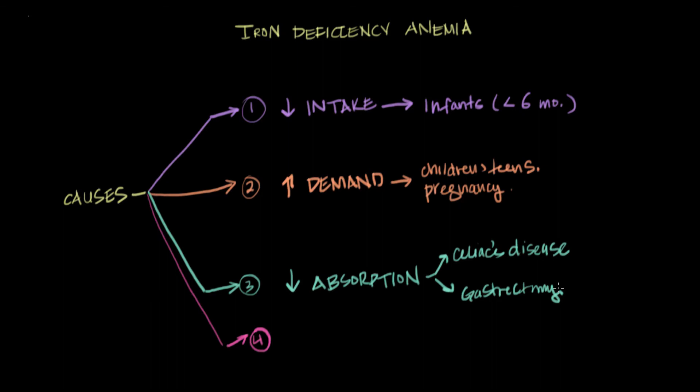Patients who do have gastrectomies are prone to developing iron deficiency anemia. The reason for that is because stomach acid is really important in converting our dietary iron into a form that's more readily absorbed by the gut. When you have a decrease in the formation of stomach acid, when you have less stomach acid around, you're not necessarily able to convert all of your dietary iron into a form that's more readily absorbed. So you get decreased absorption of iron, and then iron deficiency anemia.